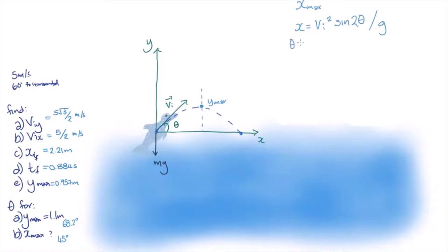If we substitute theta equals 45 degrees into the equation, then sine of 2 theta is 1, and the maximum range is vi squared over g.